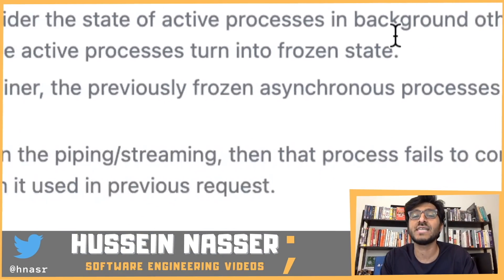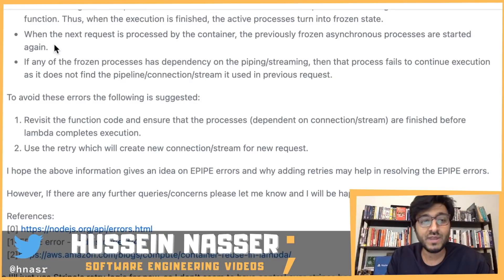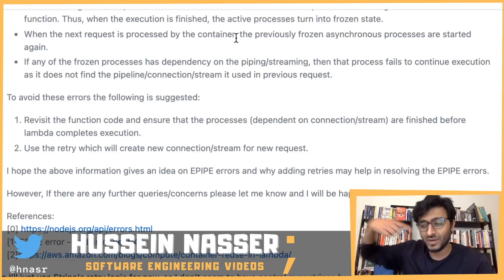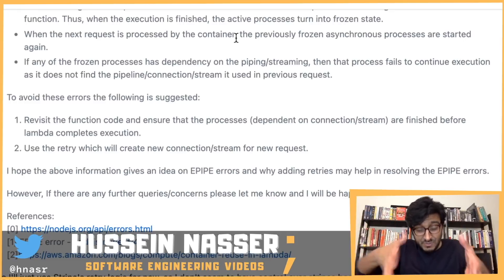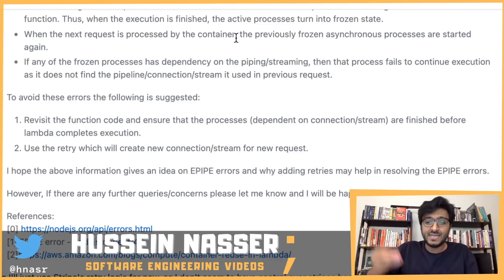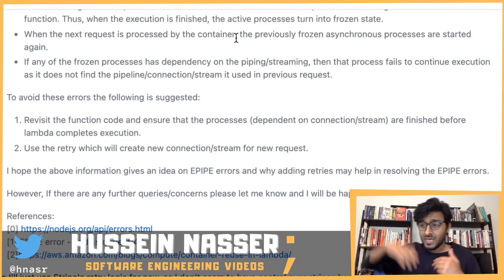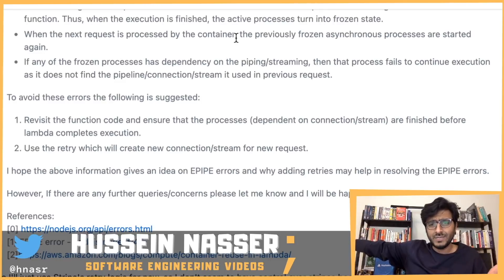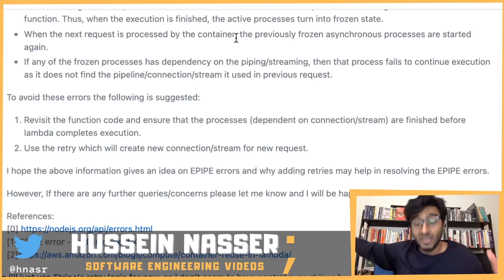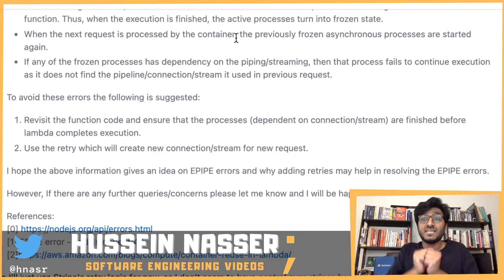So what does Lambda do with those active background processes? When execution is finished, the active processes are put into a frozen state. When the next request hits the same container due to reuse, those frozen processes are started back up in their frozen state. So if you had a TCP socket in one of those frozen processes in an ESTABLISHED state, and Lambda froze your process, the remote server eventually says 'where did this guy go?' and closes the connection based on keep-alive timeouts.